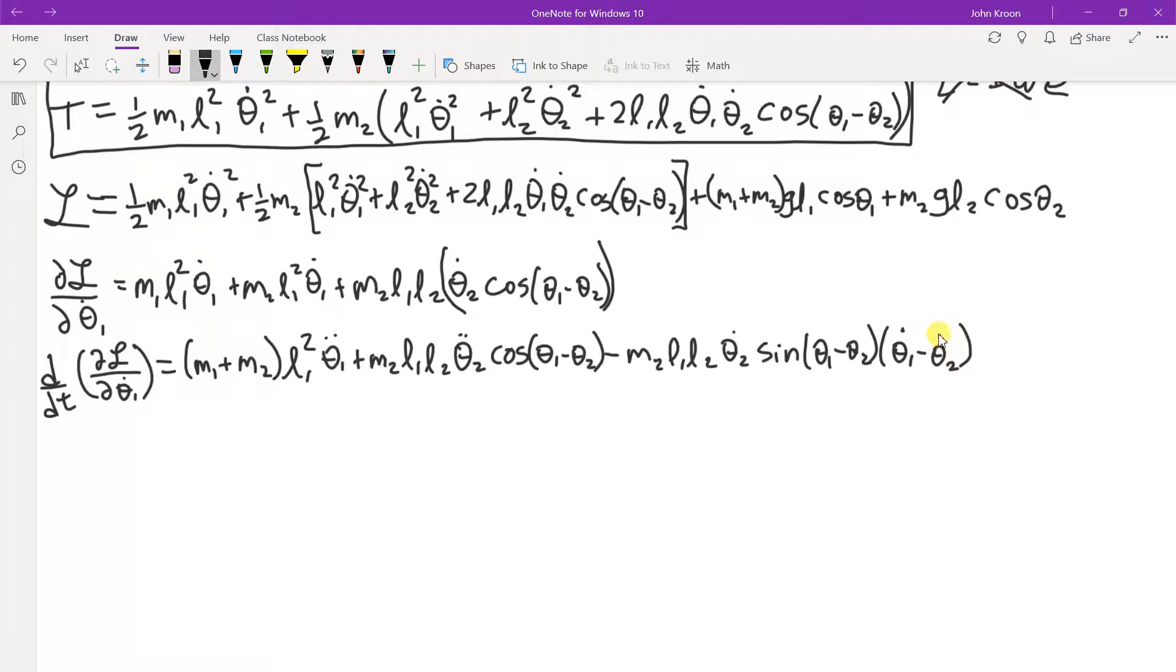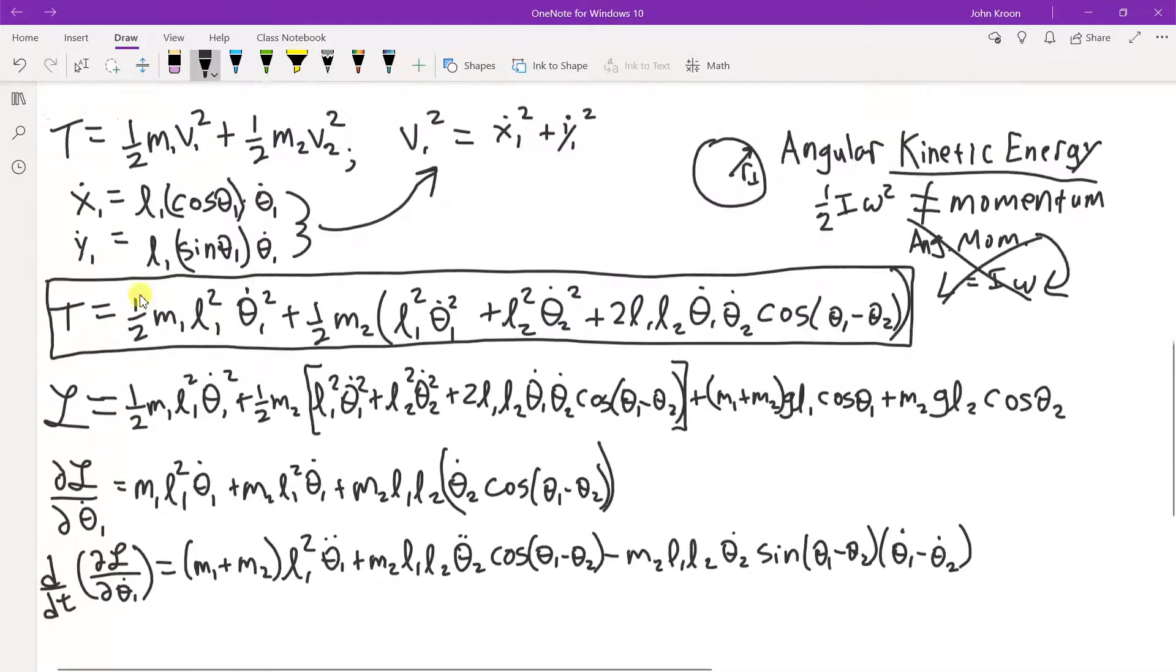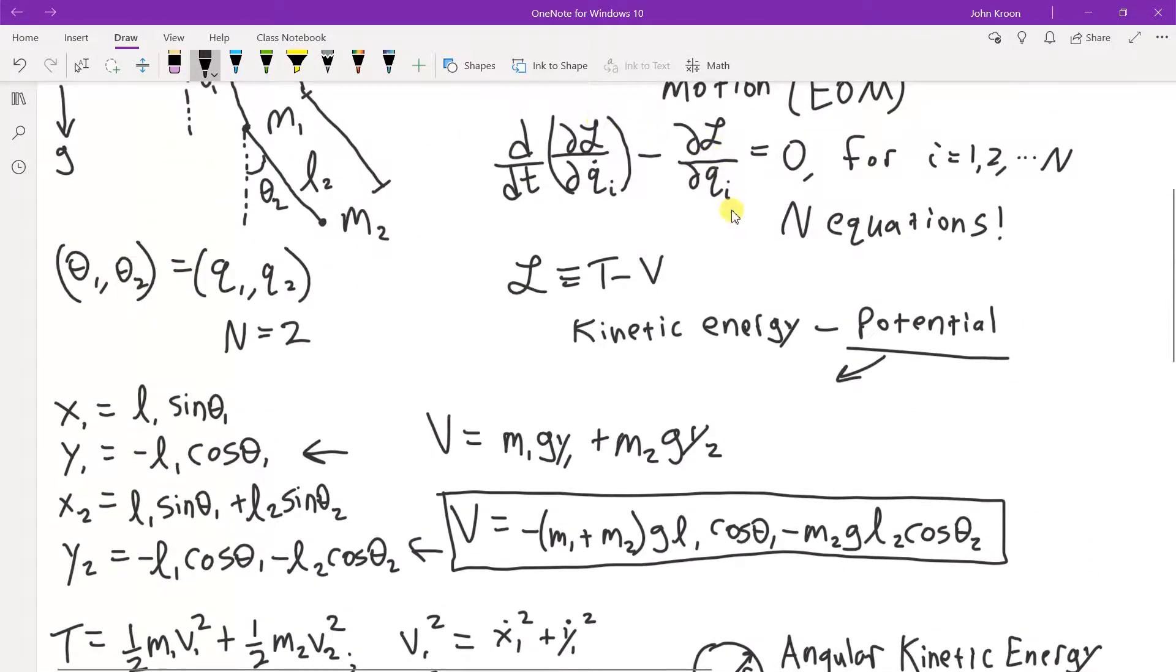The key is to just go through it term by term, take it one thing at a time, be very careful, and try to, at all costs, avoid any transcription errors. Those are the worst. All right, DL D theta, because, so now we have d by dt of DL D theta dot, but now we need the DL D theta.